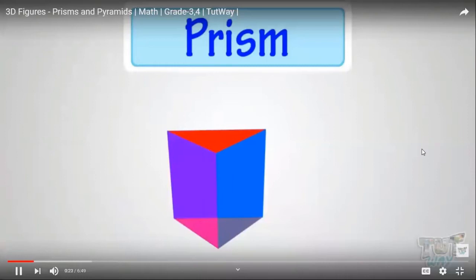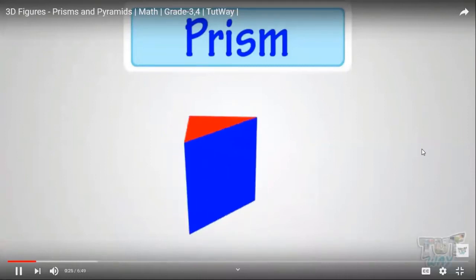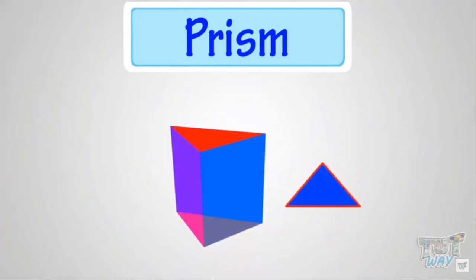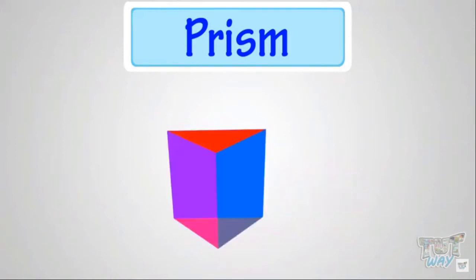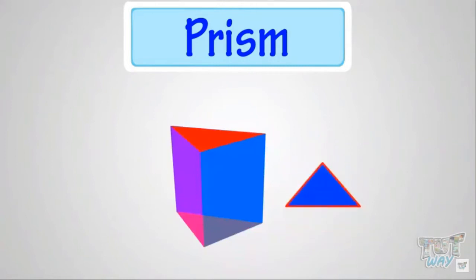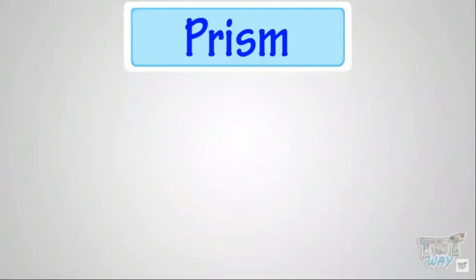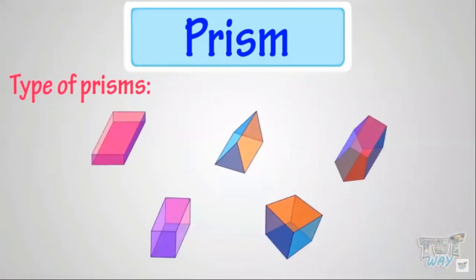A prism is a 3D shape in which the top and bottom faces are the same shape and size, and all the other faces are rectangles. I will repeat: a prism is a 3D shape in which the top and bottom faces are the same shape and size, and all the other faces are rectangles.